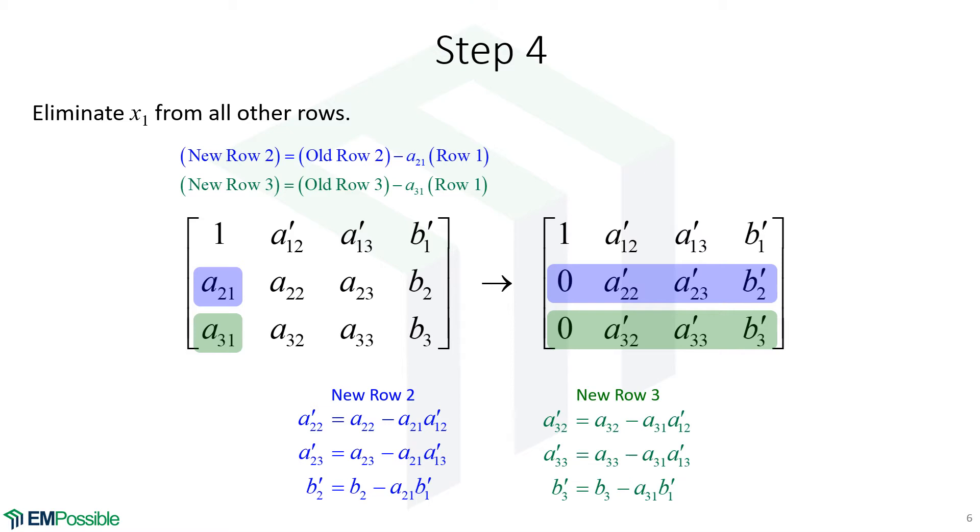Having done that, we end up with large expressions for what would go here in our matrix. Here's the new A's and B's for the new row 2 and the new A's and B's for the new row 3, and how we calculate it from the A's and B's from the previous iteration. So all we've done now, we have a 1 in the diagonal position in row 1 and 0s in every other position in that first column.